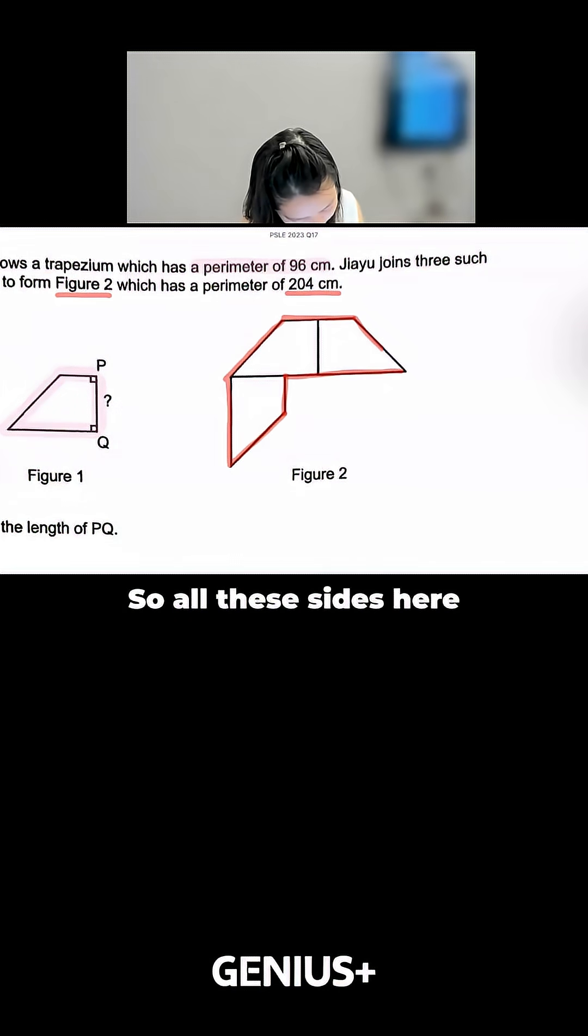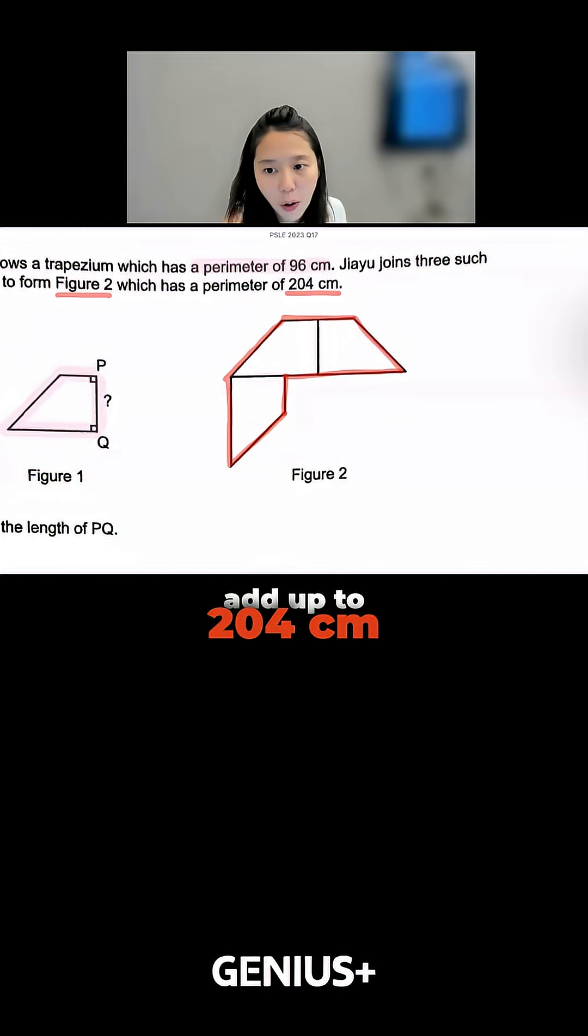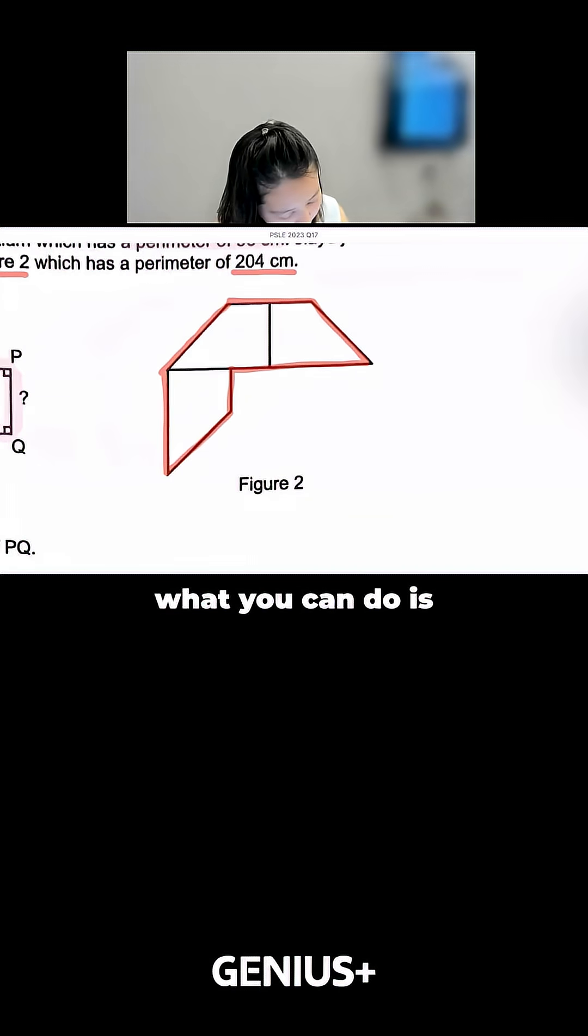So all these sides here add up to 204. So usually when you see a question like that, what you can do is split the 3 trapeziums up.